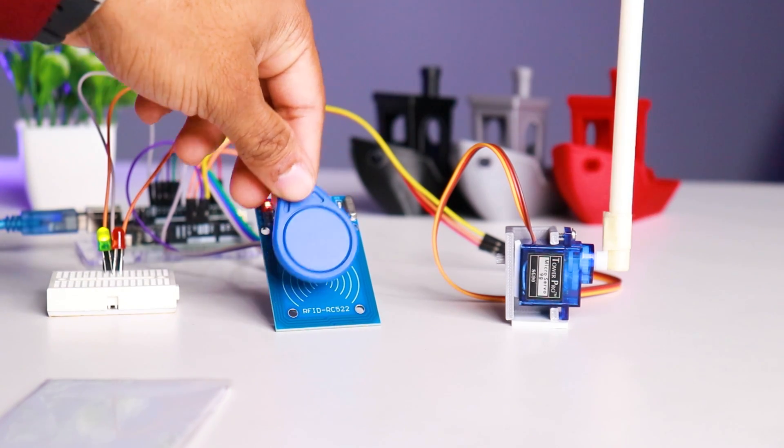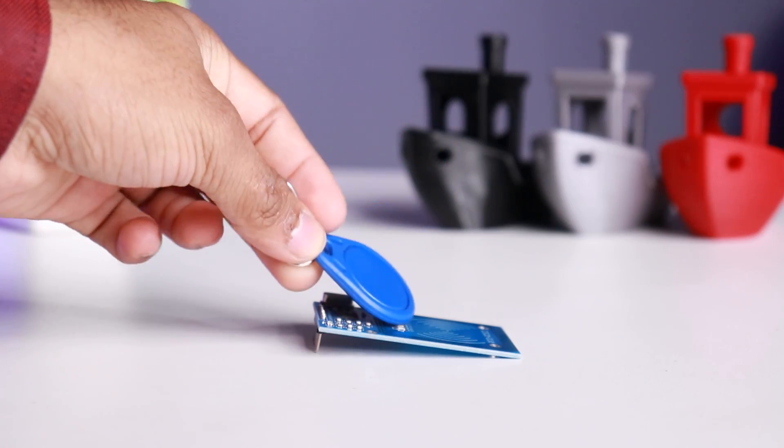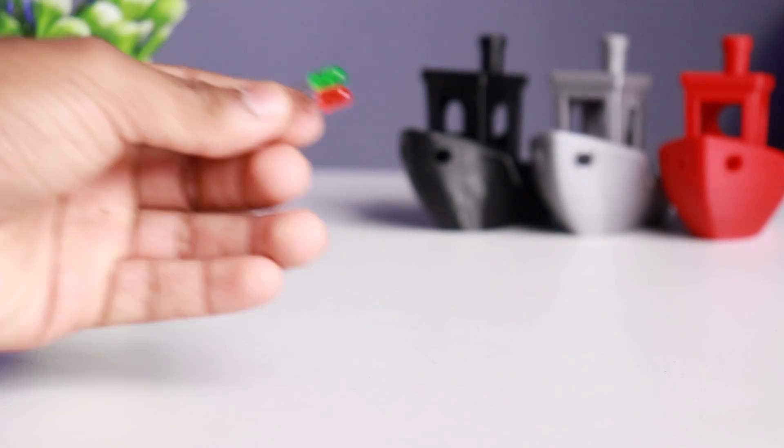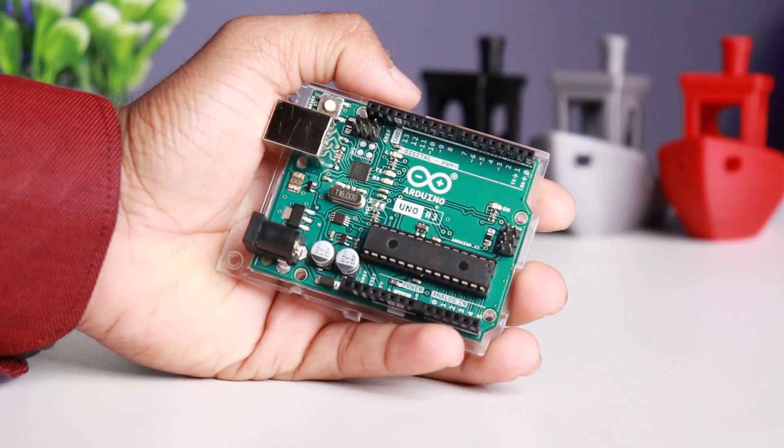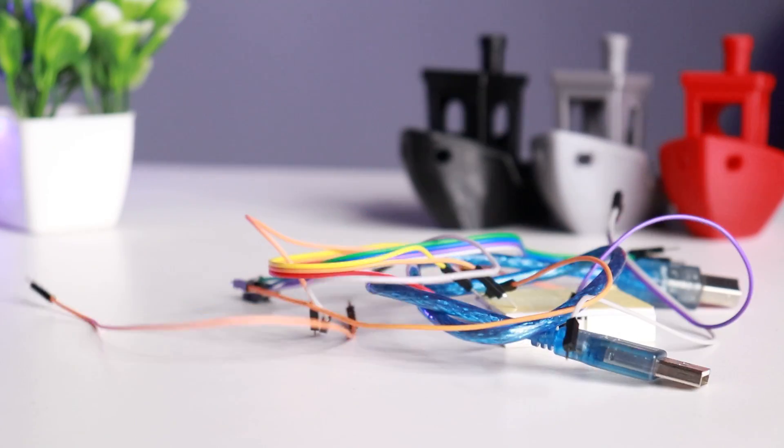Now let's interface the RFID reader with Arduino and make an access management system. We will need an RFID reader with tag, output LEDs, Arduino UNO, servo motor, and breadboard for connections with jumper wires.